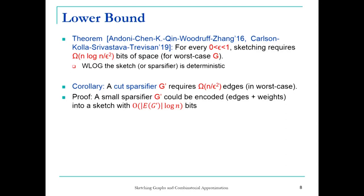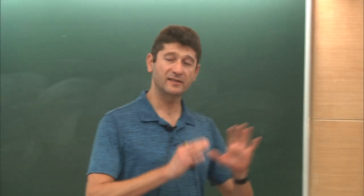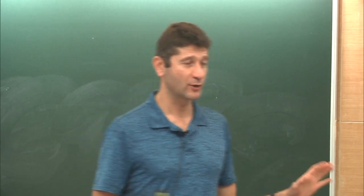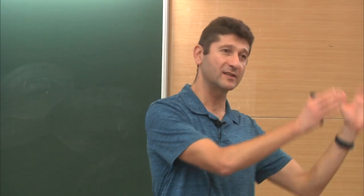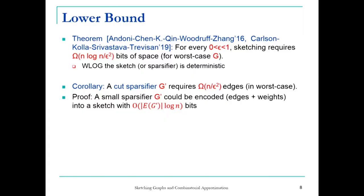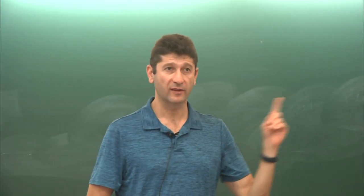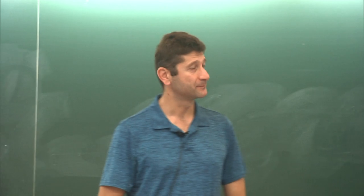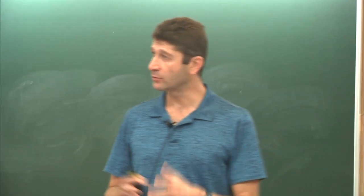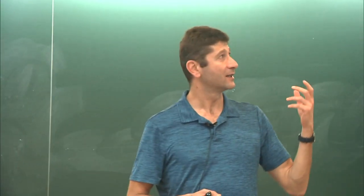The lower bound says that if you're trying to sketch all 2^n cuts — any sketch, not necessarily a graph G' — you really need at least n·log(n)/ε² many bits to represent all cut values with (1+ε) approximation. This is an information-theoretic proof. There's a lower bound on how much information you need to store about the graph to report all cuts with some approximation.